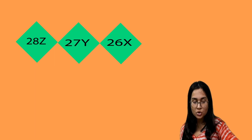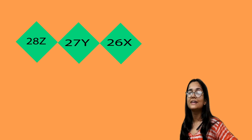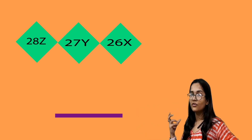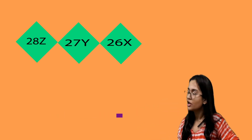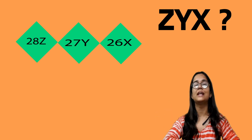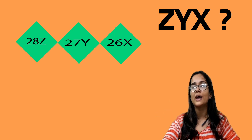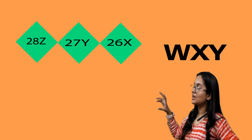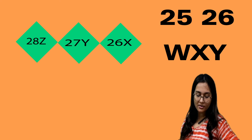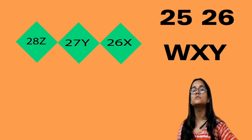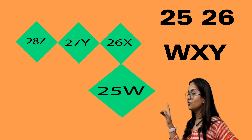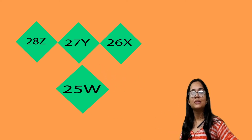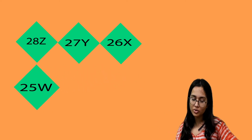If the pattern is 2, 8, Z then 2, 7, Y then 2, 6, X — the numbers are going in reverse order along with the letters. The letter before X is W, since the sequence is W, X, Y, Z. Before 26 comes 25, so the next set will be 2, 5, W. This is how you need to complete the patterns; the rest you need to complete on your own.